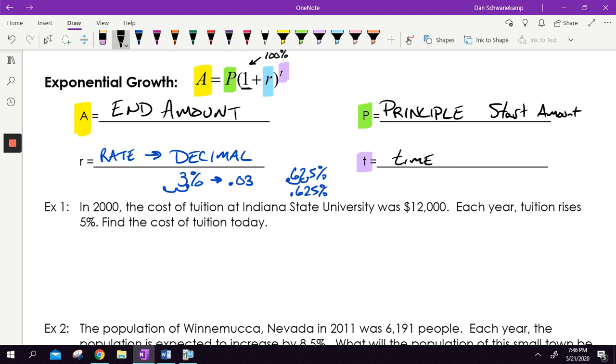So in 2000, the cost of tuition at Indiana State University was $12,000. Each year, tuition rises 5%. Find the cost of the tuition today. In the year 2000, we are going to today. Right now, we are in the year 2020. So just assume that in this case, our T is going to be 20 for this problem. So we're trying to find the cost of tuition at Indiana State. It was $12,000. How much does it cost today? We've got a 5% increase every year. So an exponential growth problem.